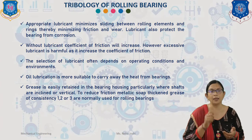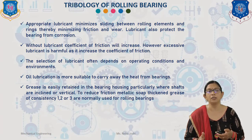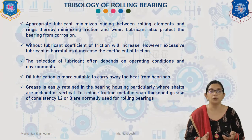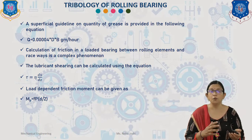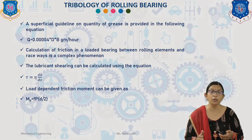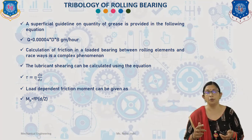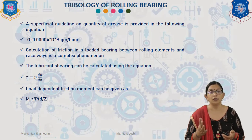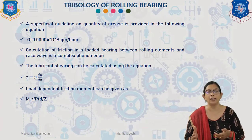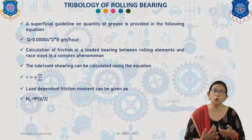Generally, grease is easily retained in the bearing housing, particularly where shafts are inclined or vertical. To reduce friction, thicker grease of consistency 1, 2, or 3 is normally used for rolling bearings. A guideline on quantity of grease for centralized supply having consistency 1 or 2 is: Q = 0.00004 × D × B grams per hour, where D is the bearing outside diameter in mm and B is the bearing width or height in mm. It is important to note that the friction coefficient is proportional to the size of the contact area between rolling element and raceway. Ball bearings with 4 or 3 points of contact exhibit greater friction than bearings with 2 points of contact.